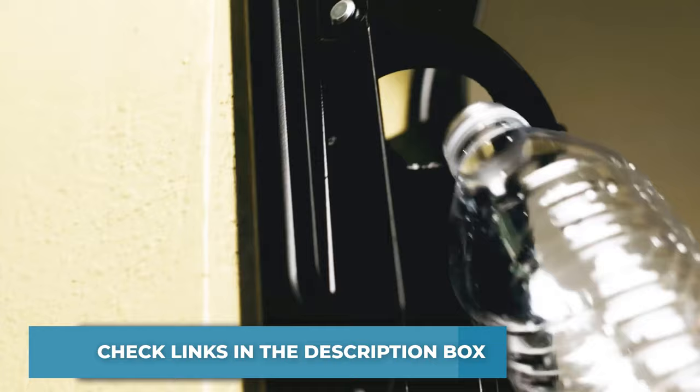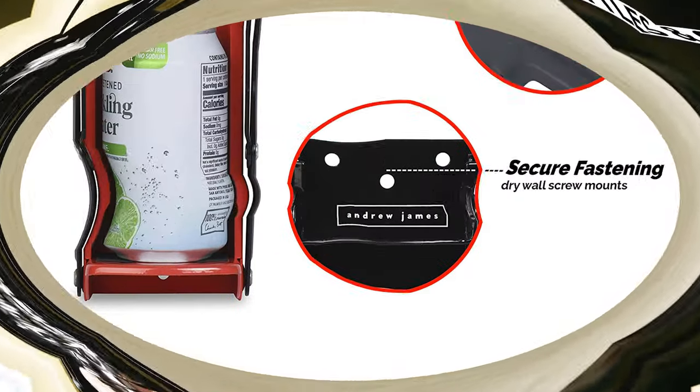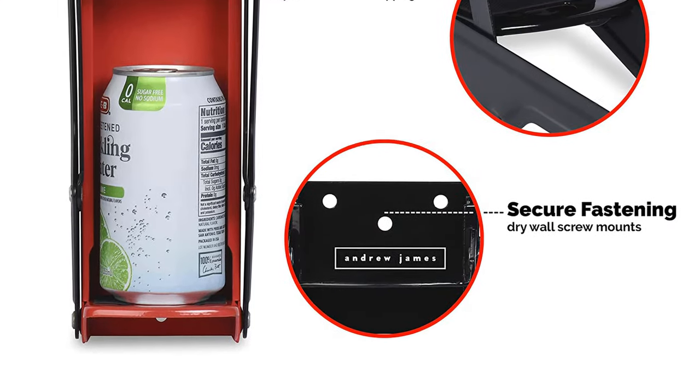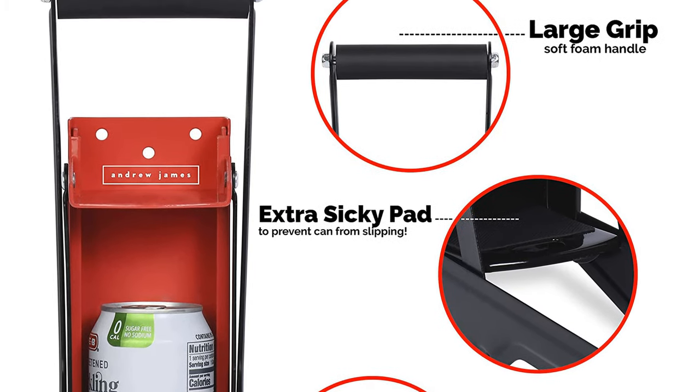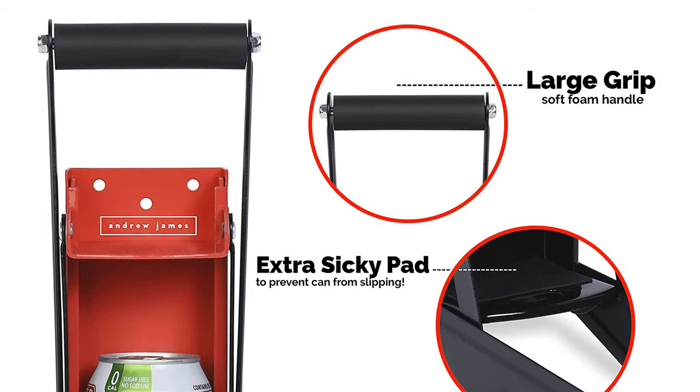Crushes cans and plastic bottles and also is a bottle opener. Hole in its top plate designed to easily crush plastic bottles. Easy and secure fastening to the wall with dry screw mounts included. Three holes at the top and one at the bottom to secure to almost any surface.